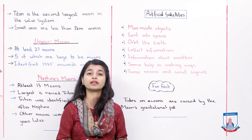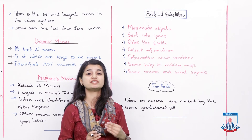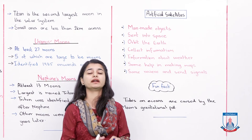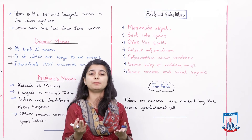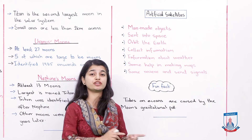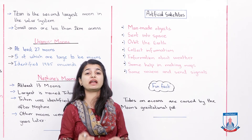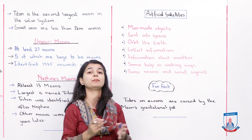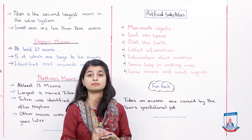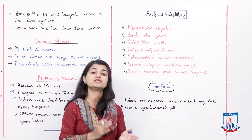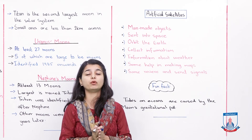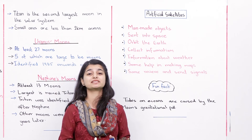Iske ilaawah ik aur kaam jo satellite karti hain woh hai sending and receiving signals. For example, a cricket match jo Argentina mein ho raha hai — aap Lahore, Karachi, ya kahin bhi baithe ho, aap use live dekh pa rahe ho. Bilkul isi liye nazara raha hai kyunki Argentina se signals woh satellite pe jaa rahi hain aur satellite un signals ko aap tak bhej deti hai at a very fast speed. So instantly you can see the live performance. Telephone calls, emails, text messages, Facebook — those signals are coming and going by satellite. Internet navigation is also being used by satellite. Satellites perform all tasks and influence your daily life.